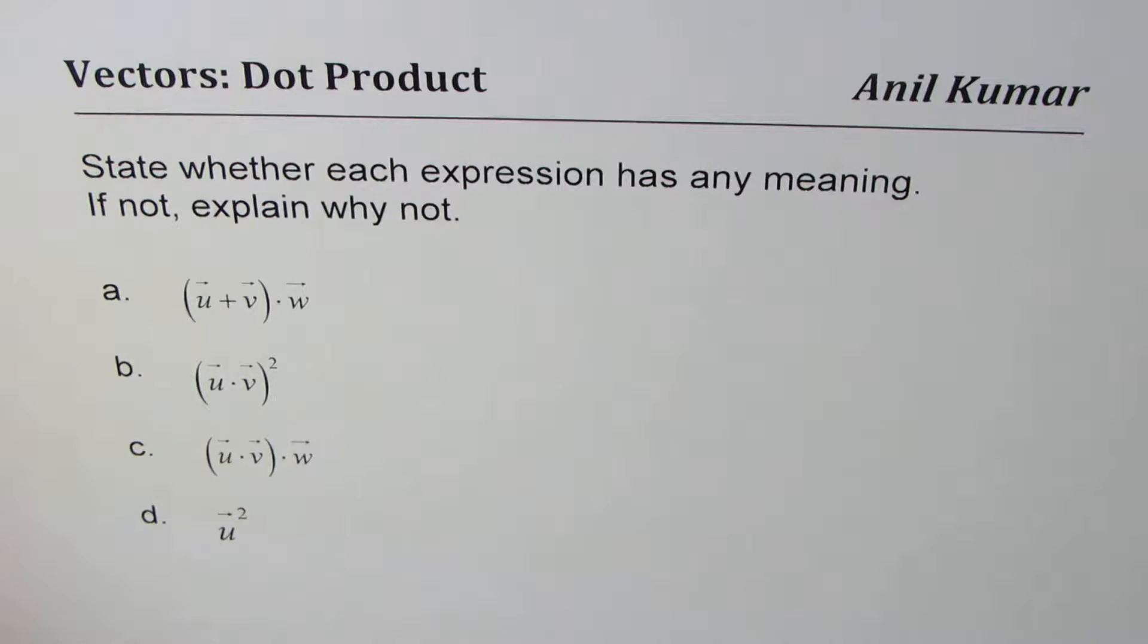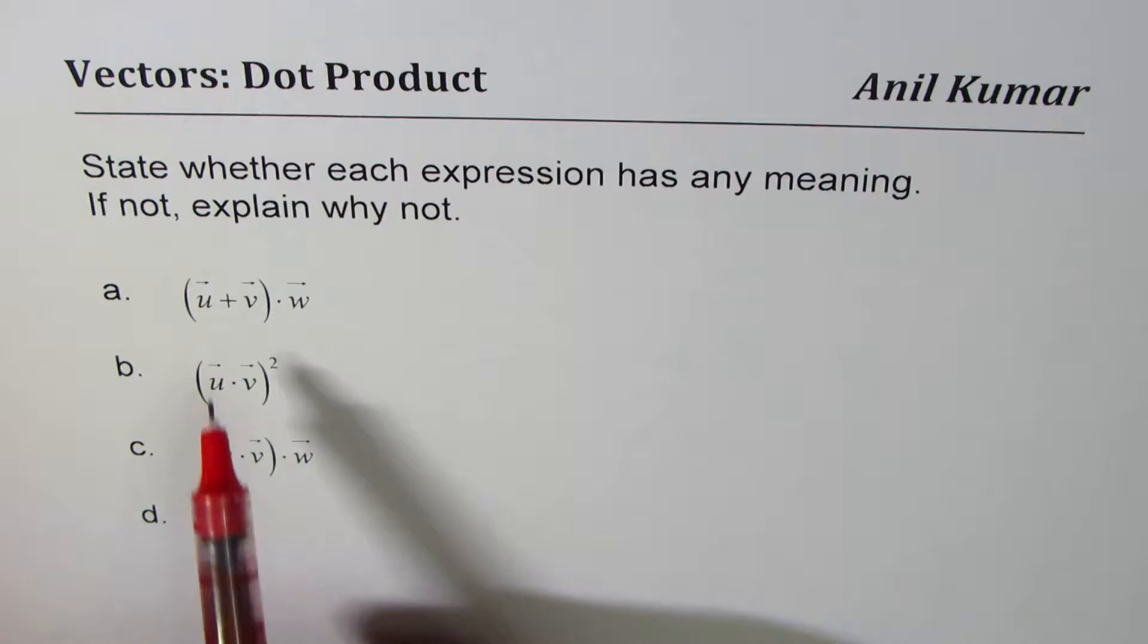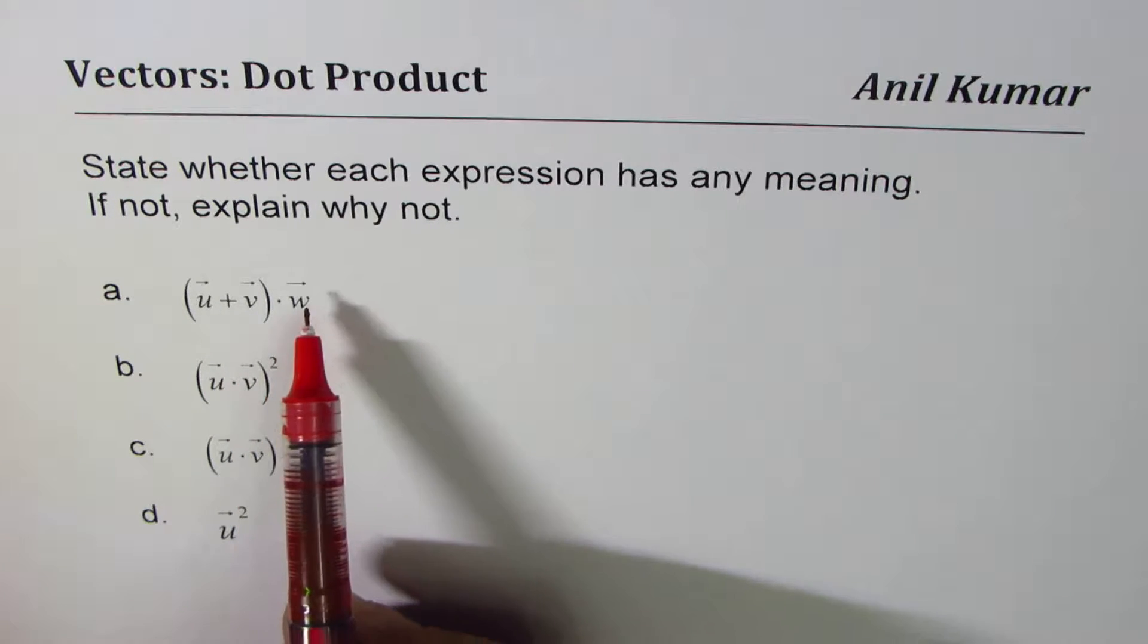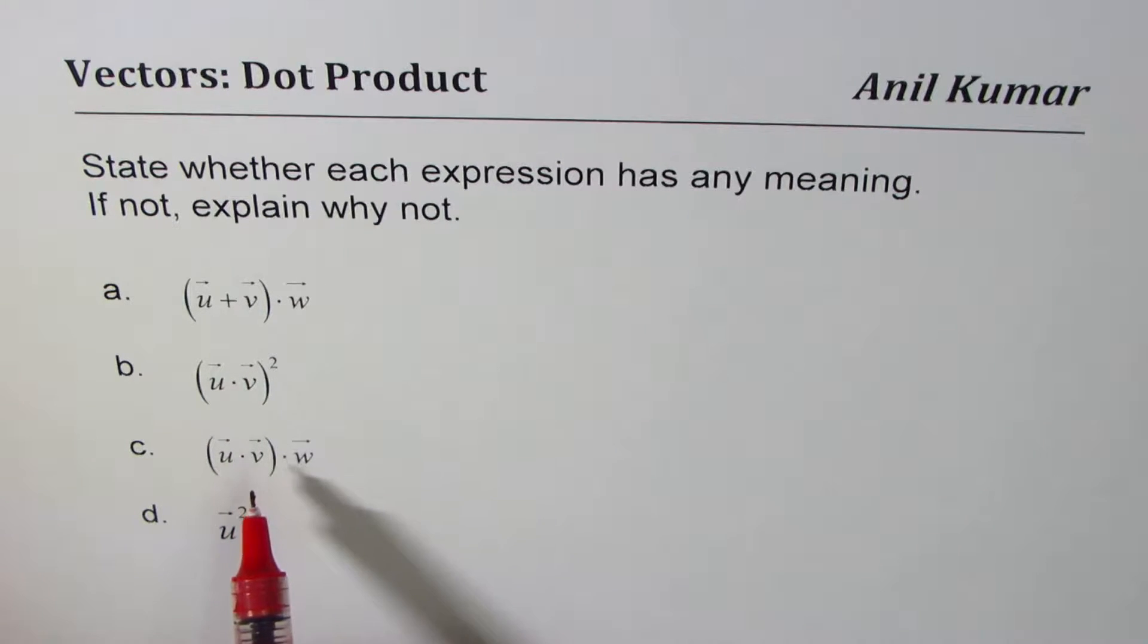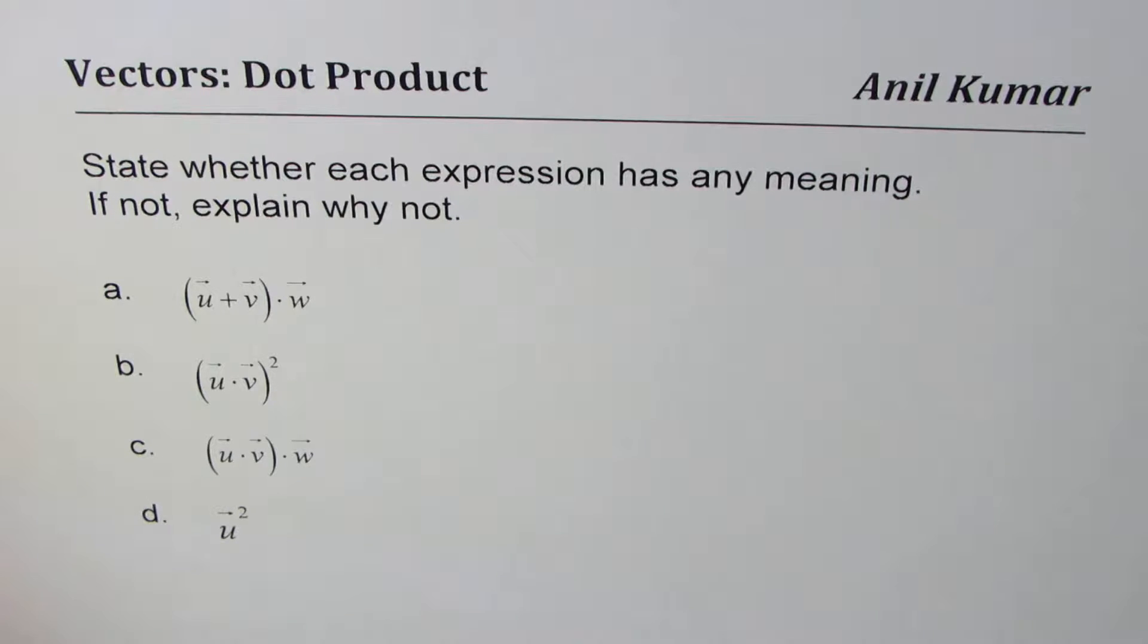I'm Anil Kumar. Here is a test question on dot product of vectors. The question for you is: state whether each expression has any meaning. If not, explain why not. We have four parts to it. These are all vectors. We're talking about vector u plus vector v dot vector w. Does it have a meaning or not?